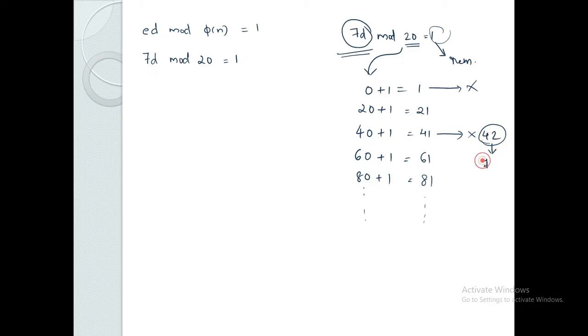We check which of these values is divisible by 7. 7 into 6 equals 42, so 41 is not correct. Looking at 21: 7 into 3 equals 21. So 7·d equals 21, which means d equals 3.